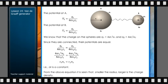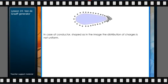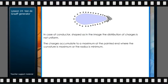From the above equation, it is seen that smaller the radius, larger is the charge density. In case of a conductor shaped as in the image, the distribution of charges is not uniform. The charges accumulate to a maximum at the pointed end where the curvature is maximum or the radius is minimum.